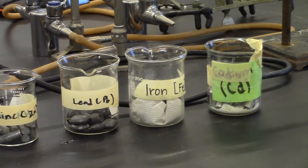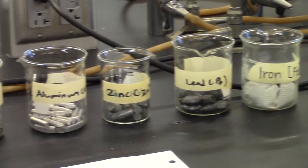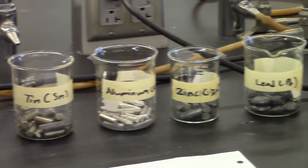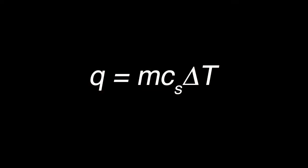What we're going to do now is find the specific heat of six different metals. To determine the specific heat, we're going to use the equation for heat, which is Q or the heat is equal to mass times the specific heat times the change in temperature.